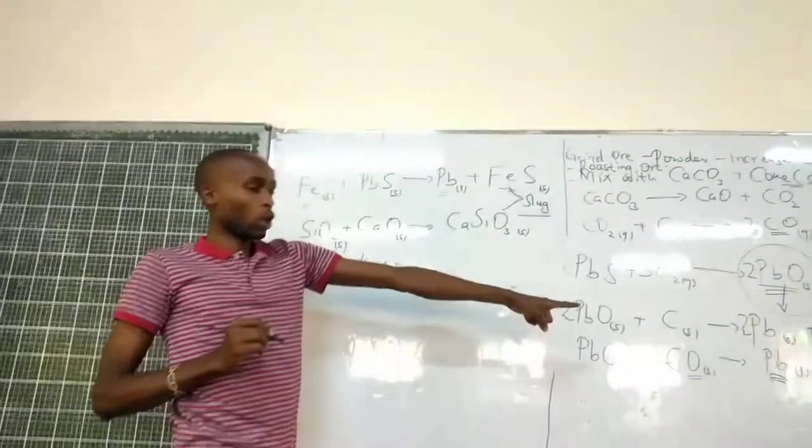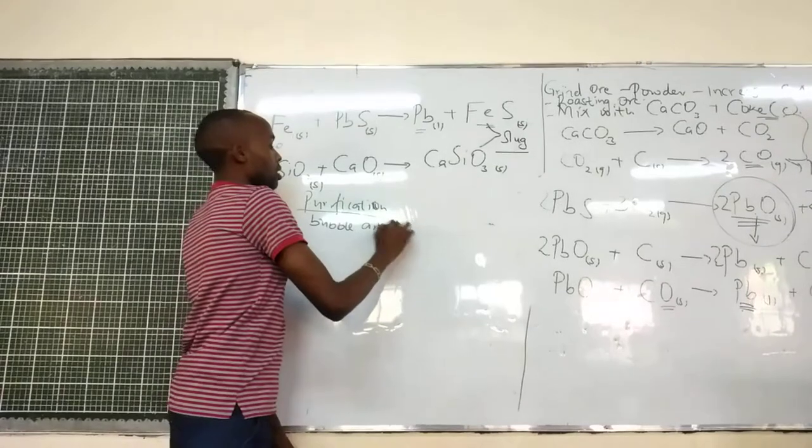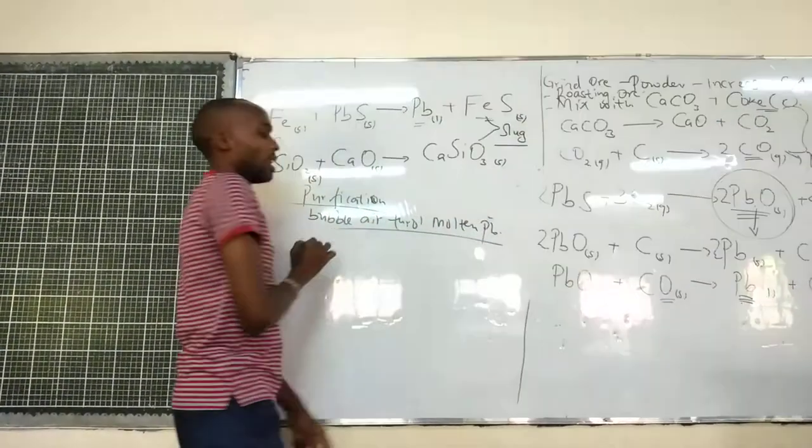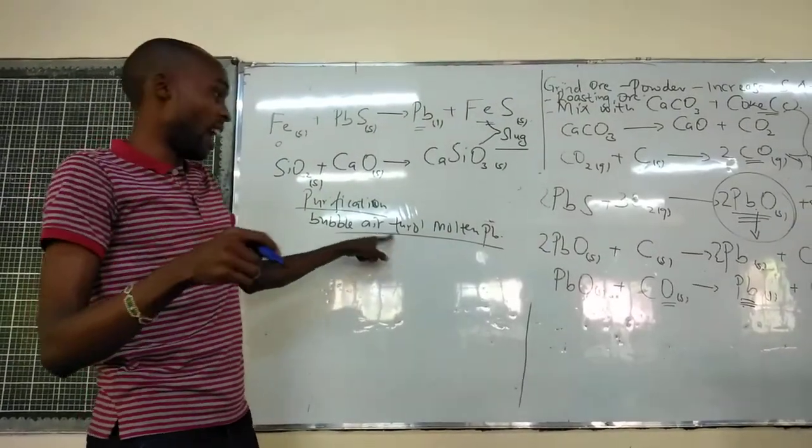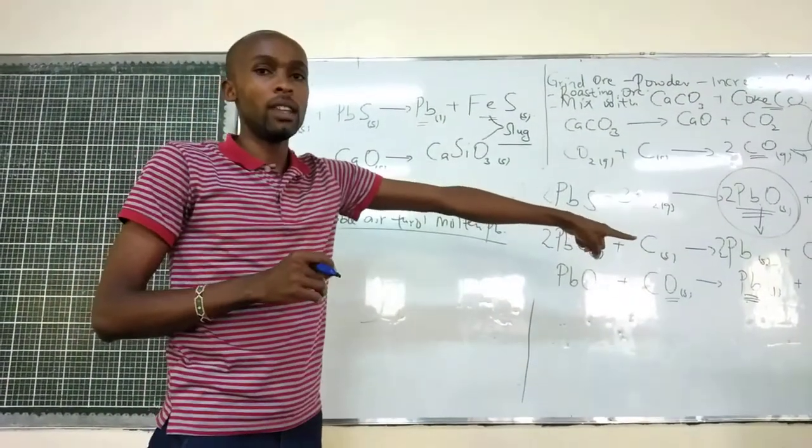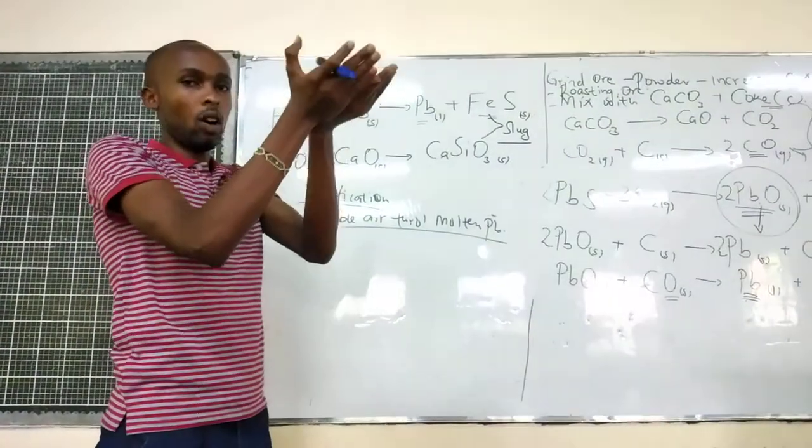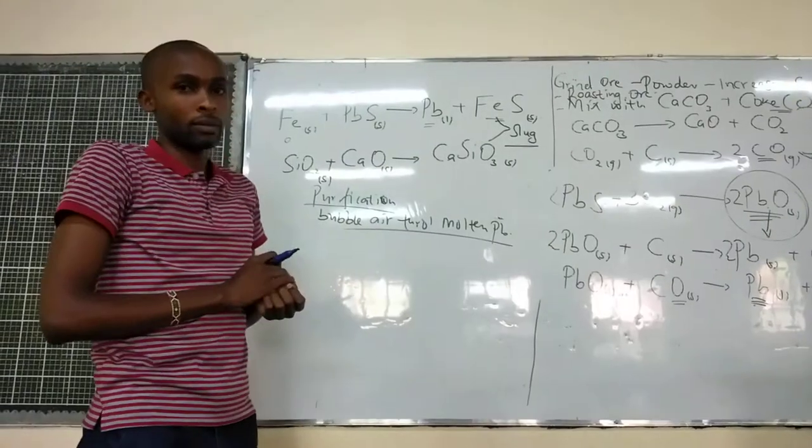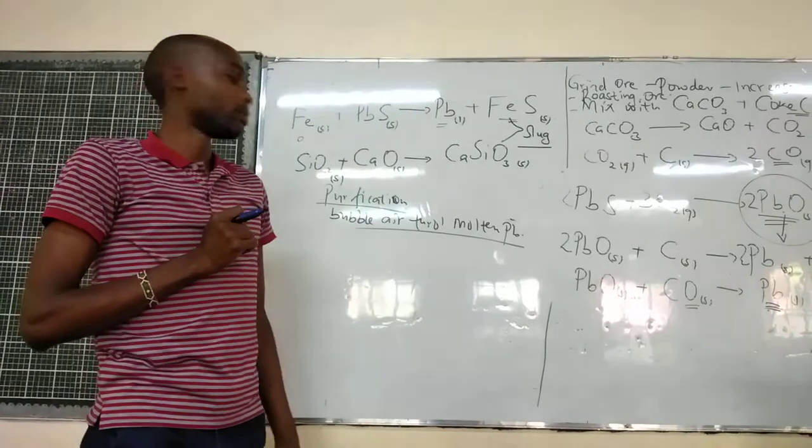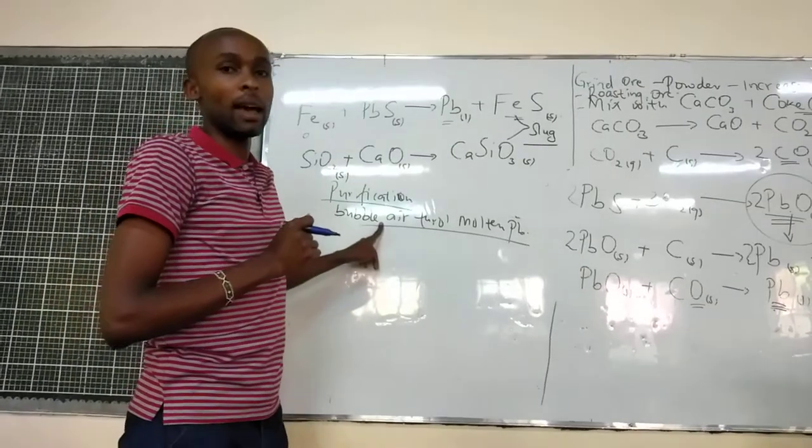So, when it is molten, first of all, you can bubble air through the molten lead. And the importance of this air is that the oxygen in the air is going to oxidize some of the substances or elements that are mixed with the lead to form other substances that are of less density that will float on the surface. If they are gaseous, they can even escape into the atmosphere. But now, to obtain 100% pure lead, that one is done by electrolysis.